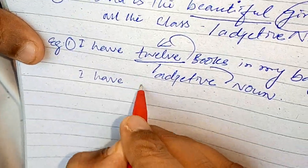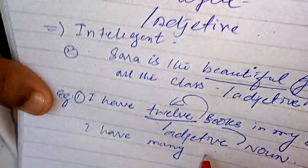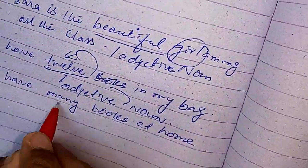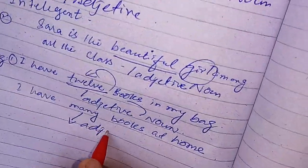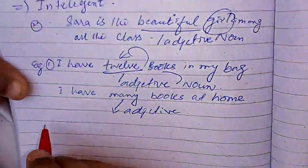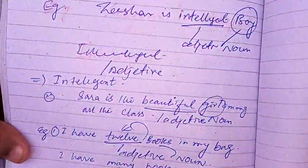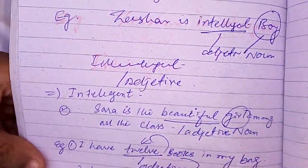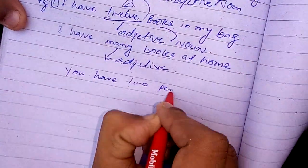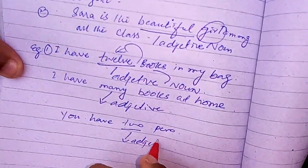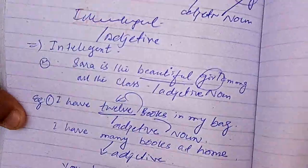If I say 'I have many books at home,' here 'many' also shows an adjective. Similarly, 'You have two pens' — here 'two' is also an adjective. These are simple examples of adjective of quantity. Many, two, three, or any number — these are also adjectives.